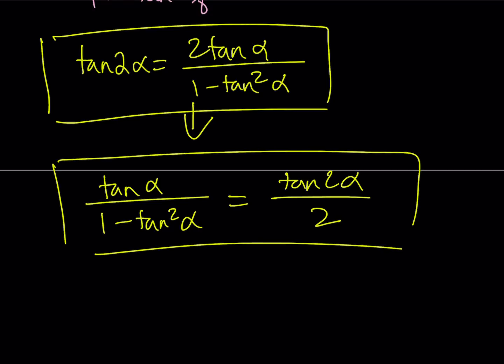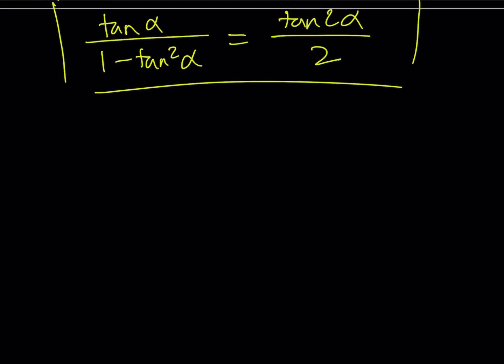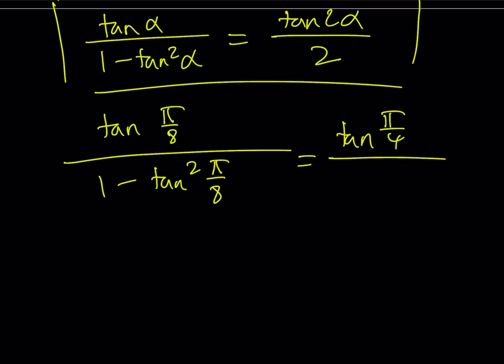So now I can replace alpha with pi over 8 on both sides, and it's going to give me tangent 2 times pi over 8, which is pi over 4, divided by 2. No trigonometry at the bottom. I do know tangent pi over 4 equals 1 because that's tangent 45. We just talked about the isosceles right triangle. So the answer is 1 half.